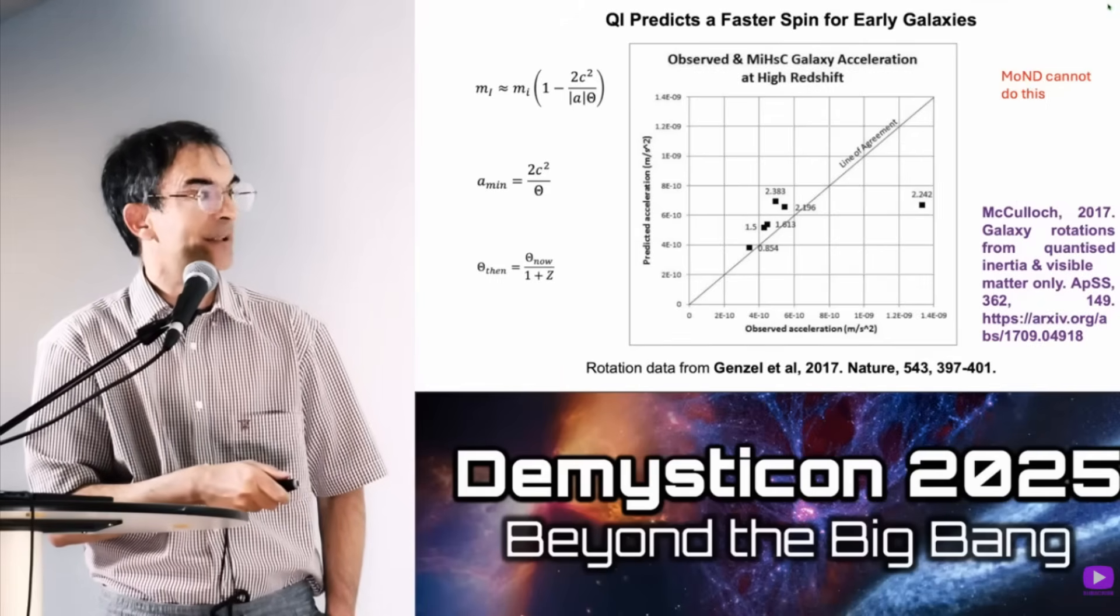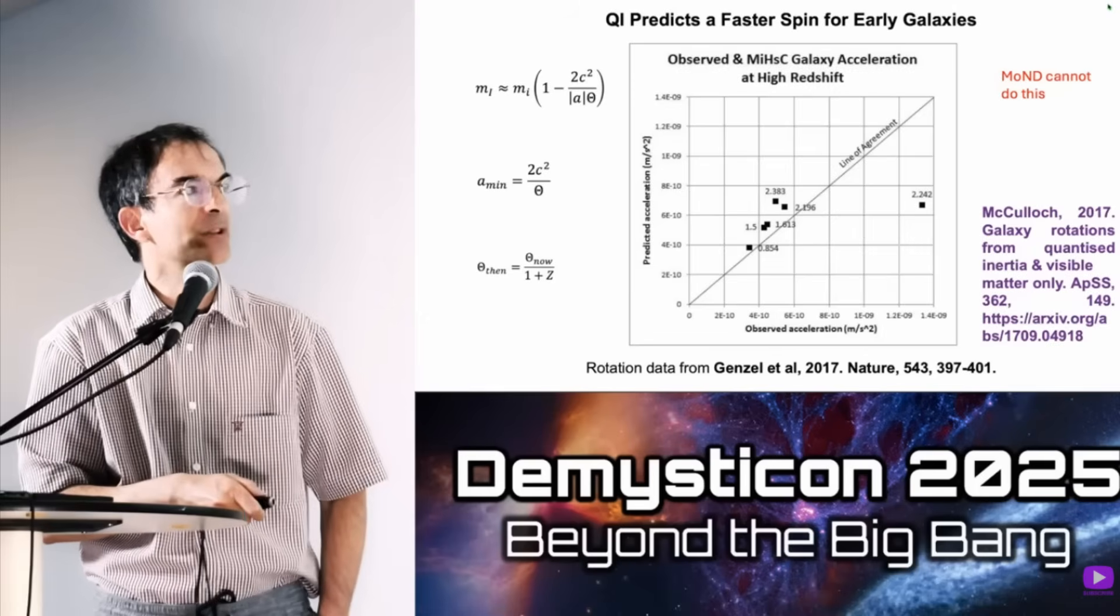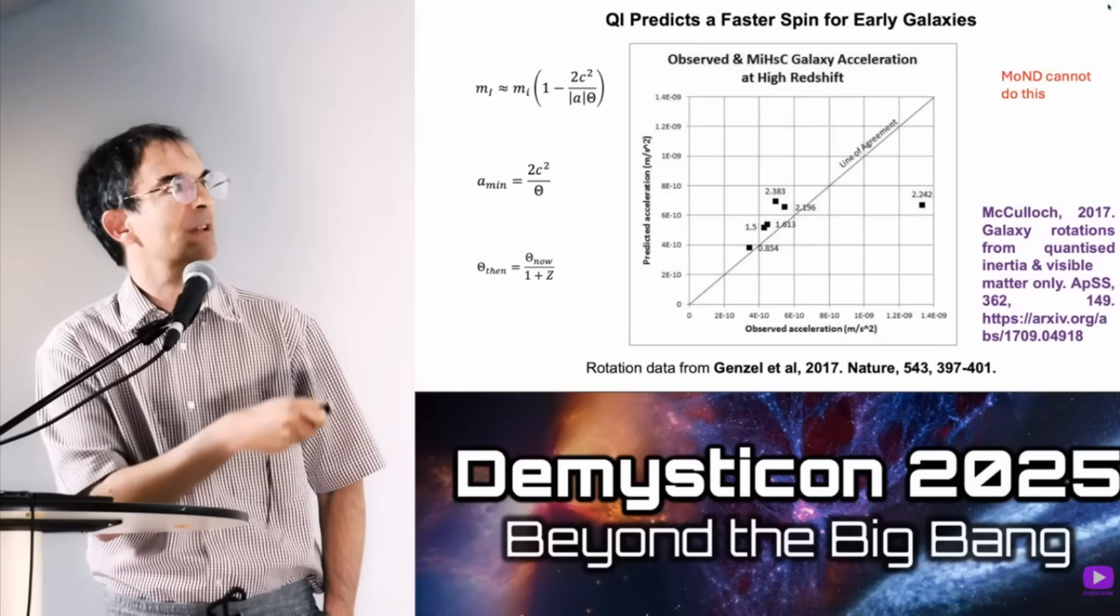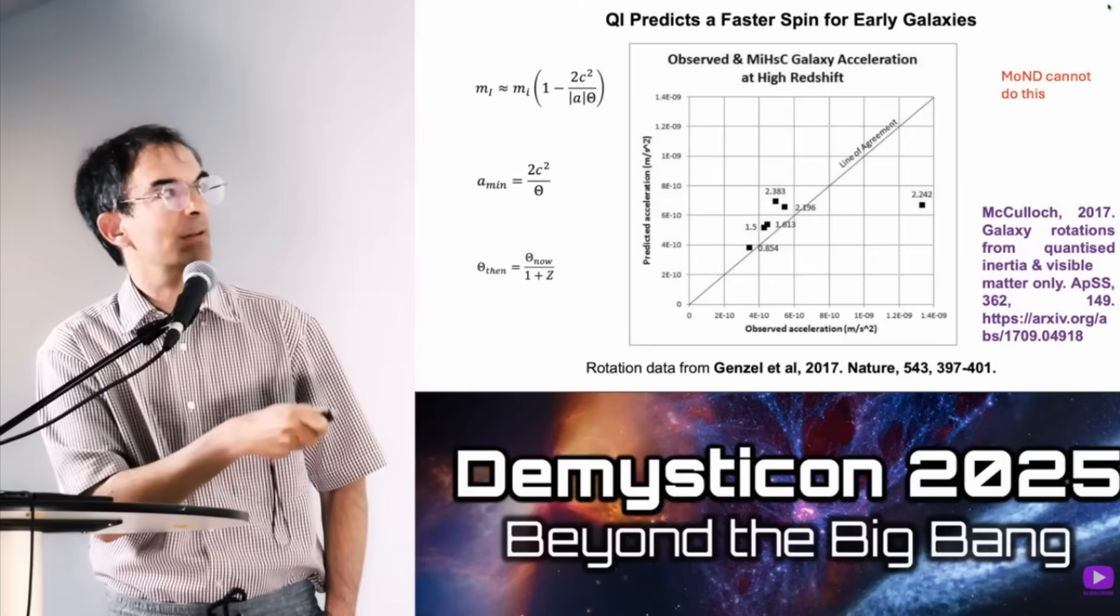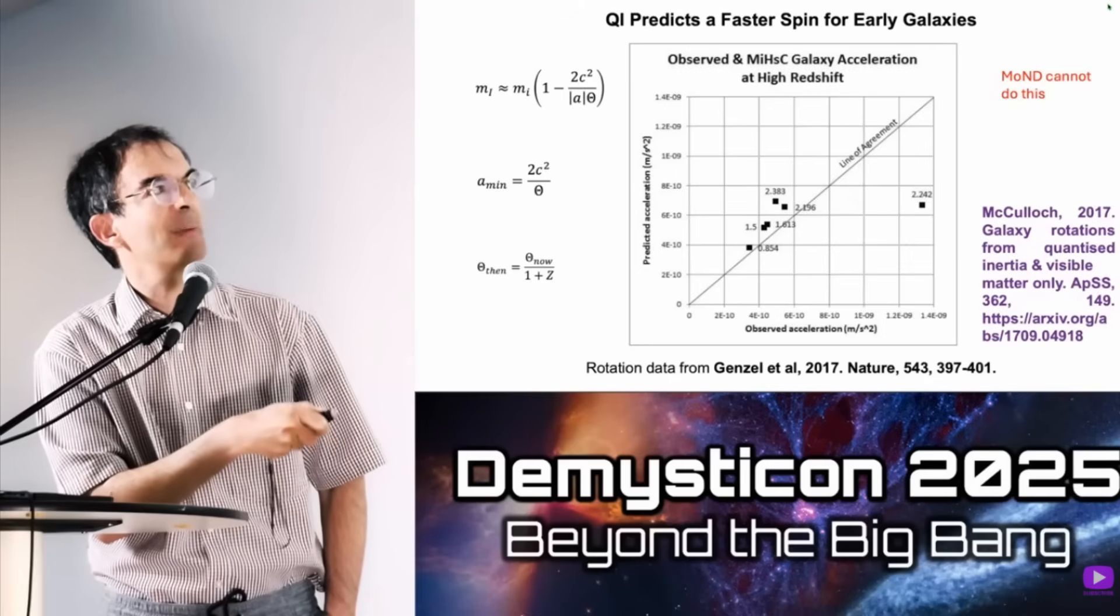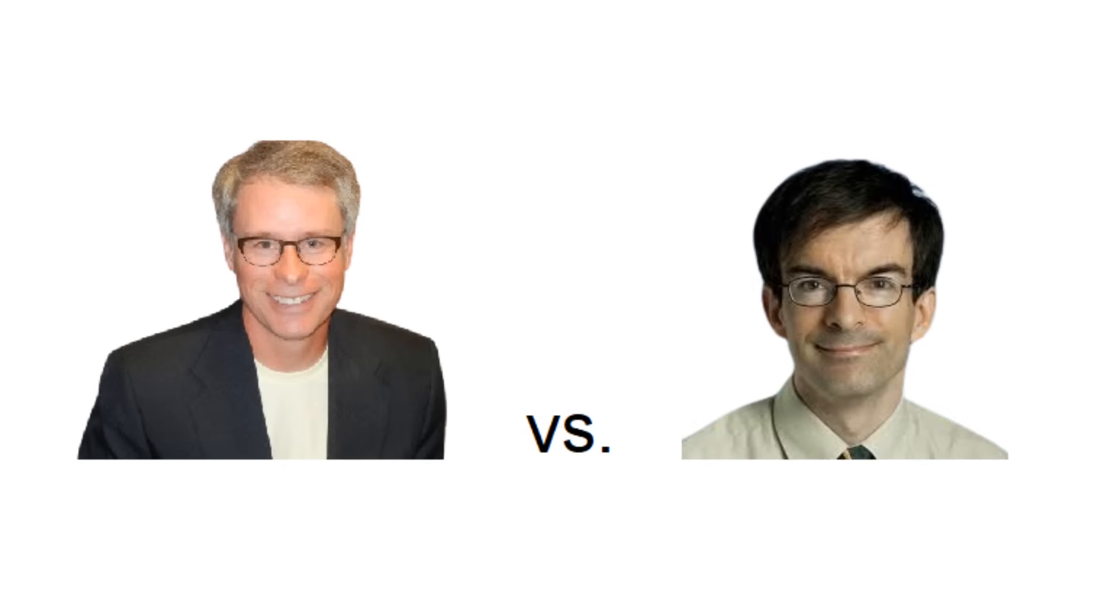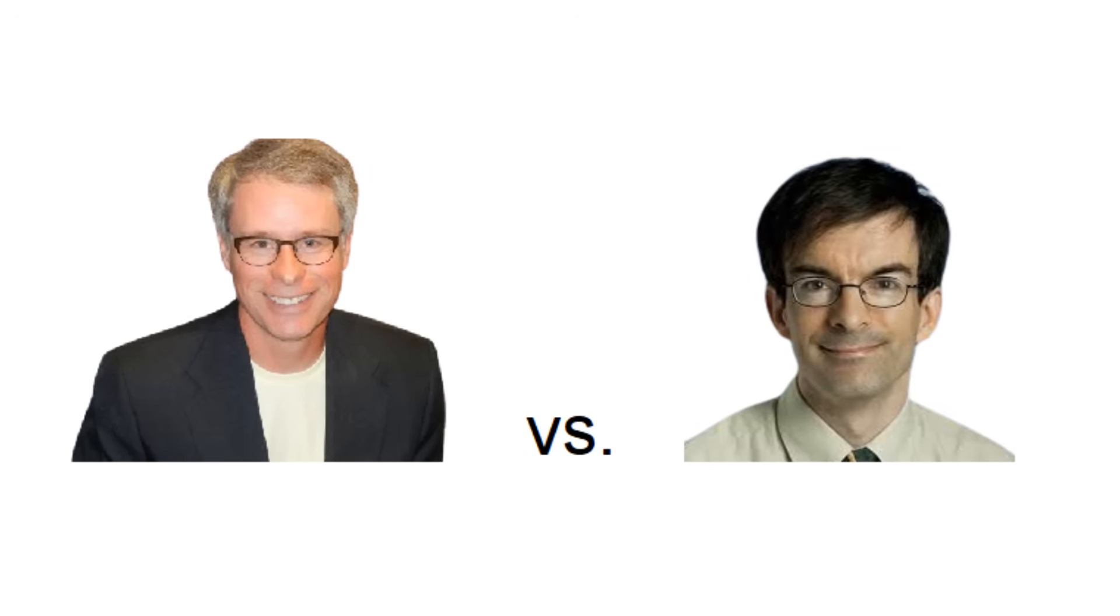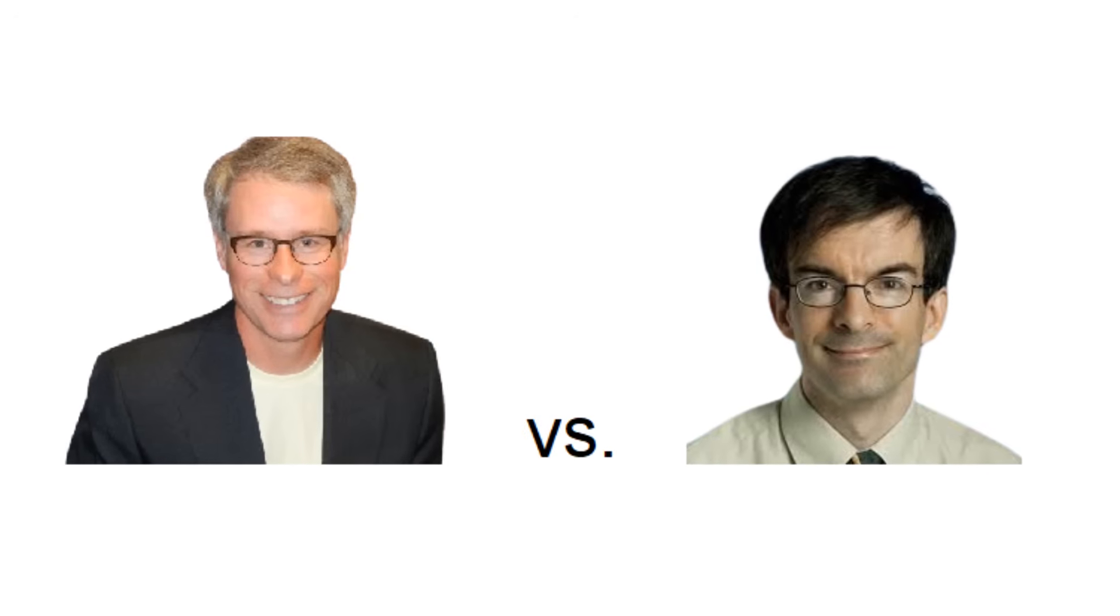And there was a paper by Gensel et al. in 2017, where he looked at this and he plotted the observed accelerations against the predicted ones, and the redshift of these different galaxies is shown by these numbers. And you can see that as the redshift increases, as we look further into the past, the acceleration of these systems increases. And I think that this disagreement between McGaugh and McCulloch should be easy to settle down by the evidence in the next years, with better measurements of high redshift galaxy rotation curves.